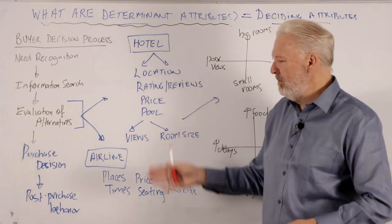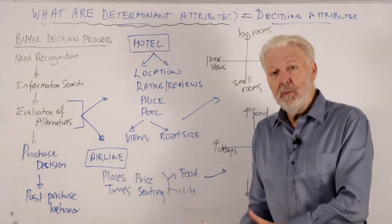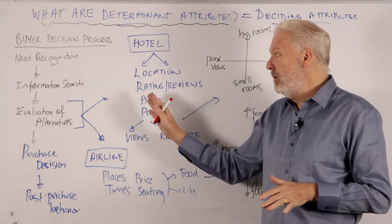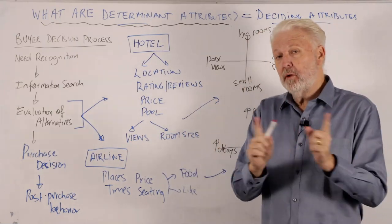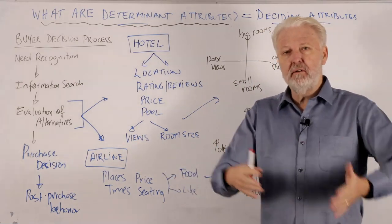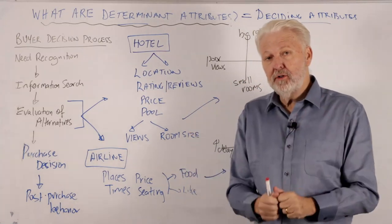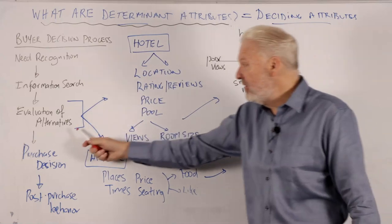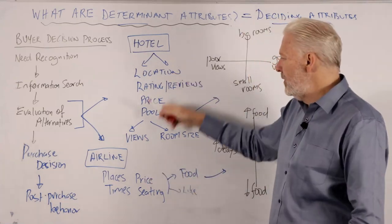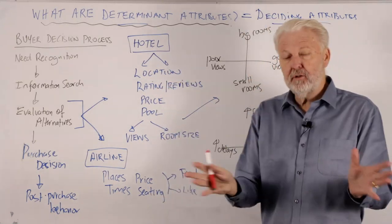Then we get down to a short list of three or four hotels that are all similar and we cannot decide — similar location, ratings about the same score, price points around the same, they've all got a pool. Now we have to go down to attributes which are less important to us, that we initially did not start looking at, and go 'okay, what's the difference here?' Does the hotel offer views — a view of the city or a view of the ocean? What size rooms do they have? Then we take those three, four, or five hotels and make the decision based on these relatively minor attributes.